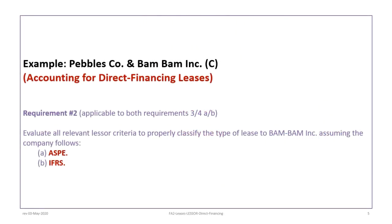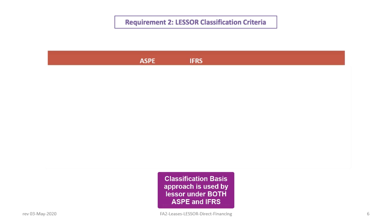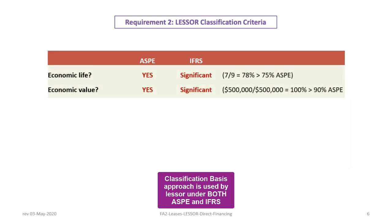The next requirement is to evaluate the relevant Leasor criteria to classify the lease to BamBam under both ASPE and IFRS. The criteria are the same under both standards using the classification basis approach. The first two criteria — economic life and economic value — are shared with the leasee perspective. The lease term of 7 years over the economic life of 9 years is 78%, which exceeds ASPE's 75% benchmark, so we have a capital lease under ASPE on this criterion alone. IFRS doesn't use strict quantitative criteria but we can use 75% as a guideline to determine significance.